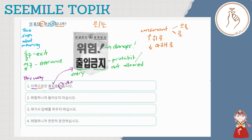And then MAN — we have MAN here. Ibig sabihin nung MAN diaan is ONLY. So sabi niya, THIS WAY ONLY — ICHO GURO MAN, CHURIBUL HASHIPSHIO — YOU CAN ENTER ONLY THIS WAY. So yun ba yung sinasabi sa sign natin?